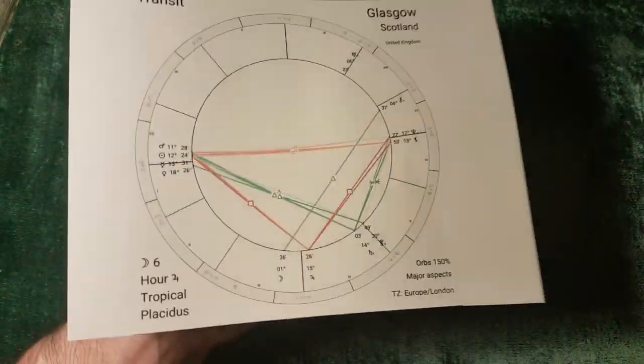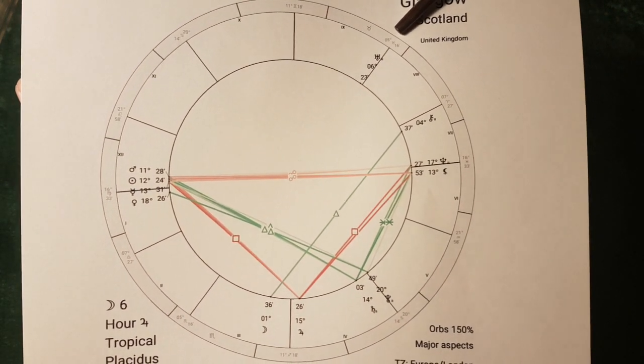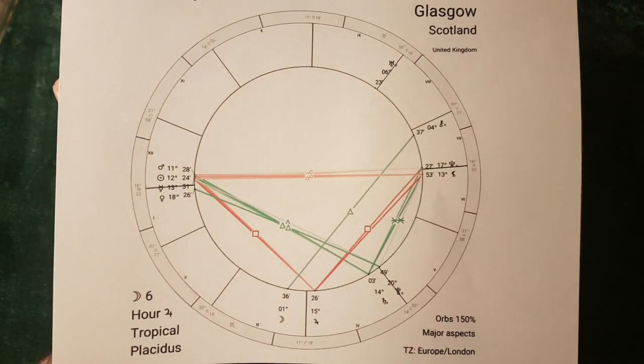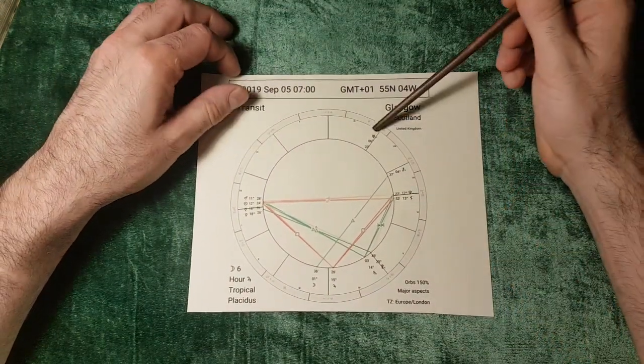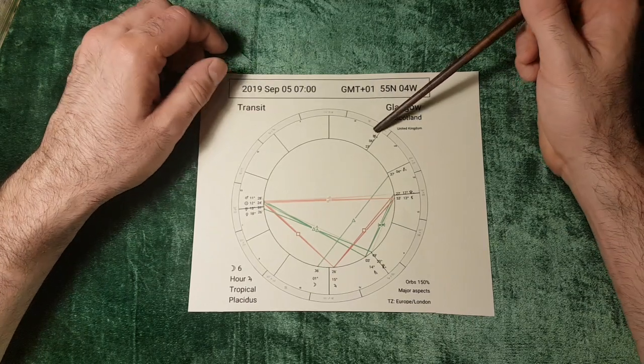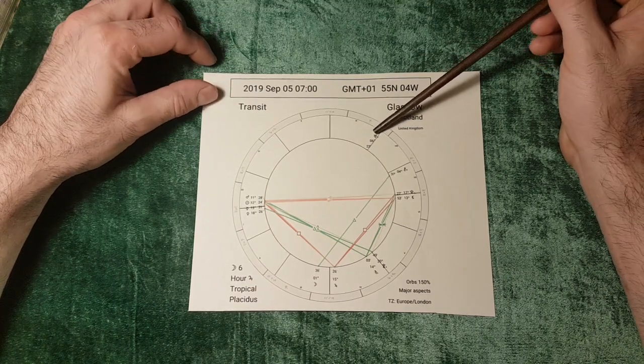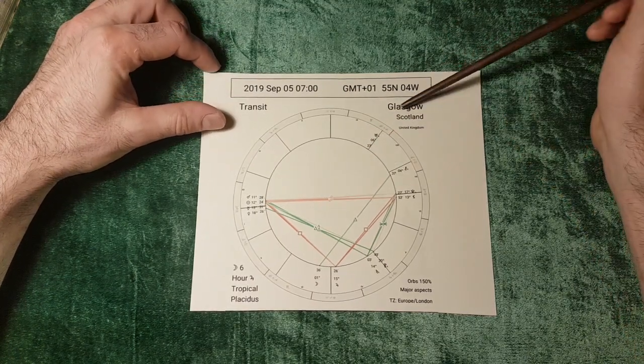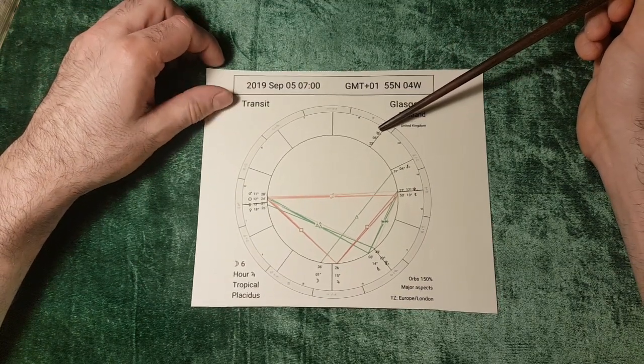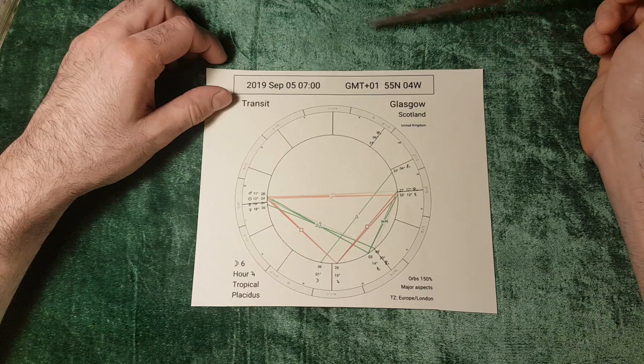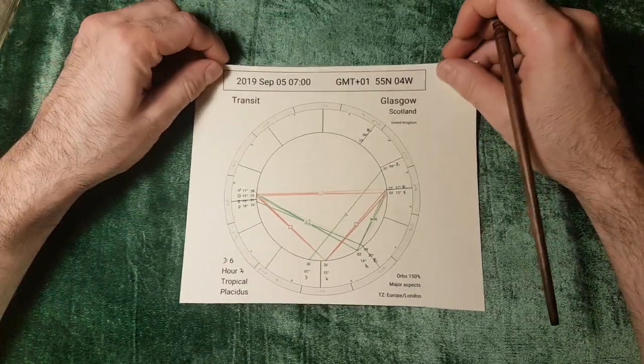Uranus is up here doing its own thing, making absolutely no aspects whatsoever to anybody, which I find very suspicious. I don't like it when I lose track of Uranus because when I do, boom, something happens. Now Uranus is currently in opposition to my natal Uranus. So you could actually work out my age there. So yeah, I am a hot mess of confusion and midlife crisis or not, whatever.